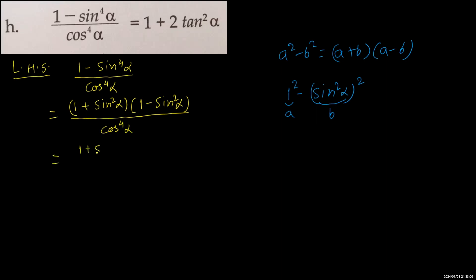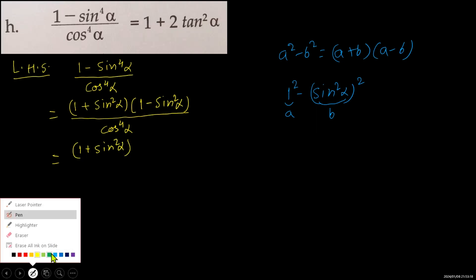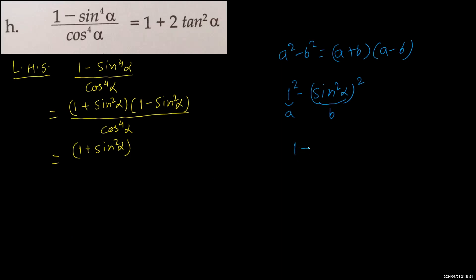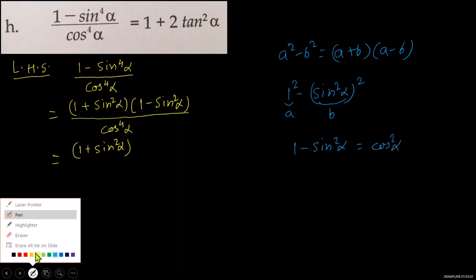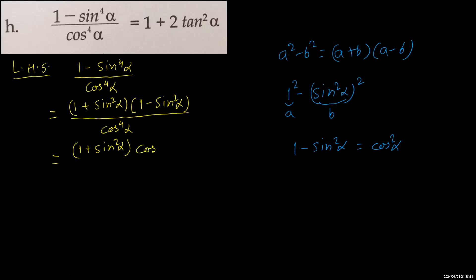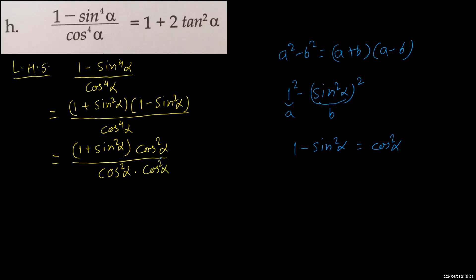We have 1 plus sin square alpha in one bracket and in another bracket we have 1 minus sin square alpha. But we know this formula: 1 minus sin square alpha equals cos square alpha. So in place of 1 minus sin square alpha, we will write cos square alpha. Upon, there is cos to the power 4 alpha, which can be written as cos square alpha into cos square alpha. One of the cos square alpha of the numerator and one of the cos square alpha of the denominator can be cancelled.